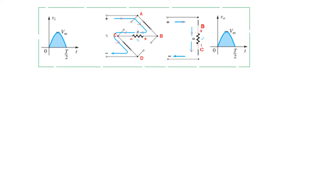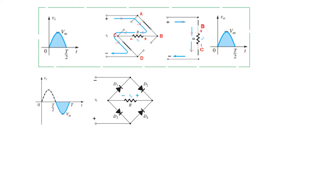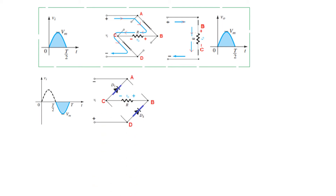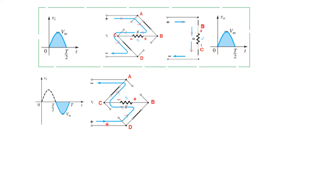Now for the negative half cycle, we invert the signs. Where we had positive at the top, we now have negative. This negative touches the cathode, making that diode forward biased and the other reverse biased. Similarly, the positive terminal arrives at the anode of another diode, making it forward biased and the remaining one reverse biased. Redrawn and following the current direction — current goes from positive, touching the right-hand side terminal first, so that terminal becomes positive. Comparing both cases: in both, terminal B is positive and terminal C is negative.